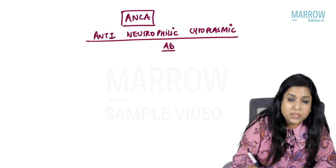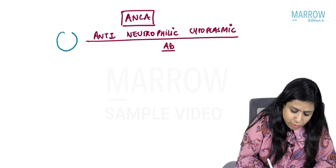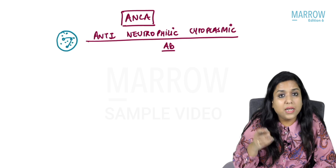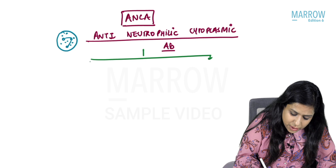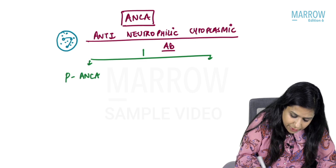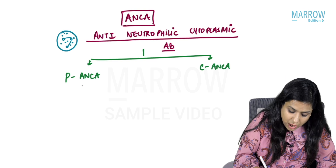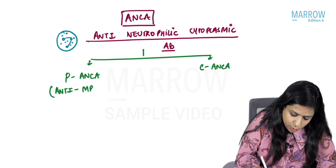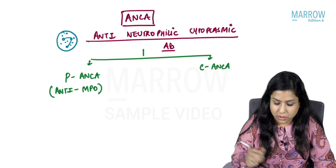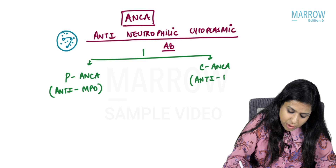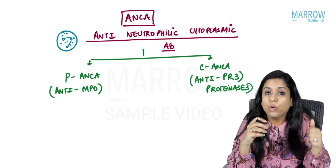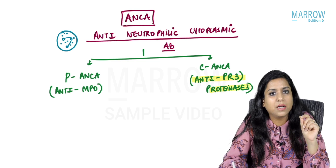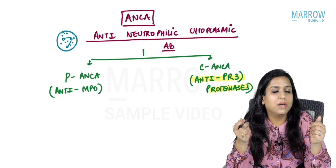Anti-neutrophilic cytoplasmic antibody — these antibodies are against the granules of the neutrophils. ANCA is of two types: PANCA and CANCA. The other name for PANCA is anti-MPO ANCA, where MPO stands for myeloperoxidase. The other name for CANCA is anti-PR3 ANCA, where PR3 means proteinase 3. So PANCA antibodies are against myeloperoxidase granules, and anti-PR3 ANCA antibodies are against proteinase 3 granules of the neutrophils.